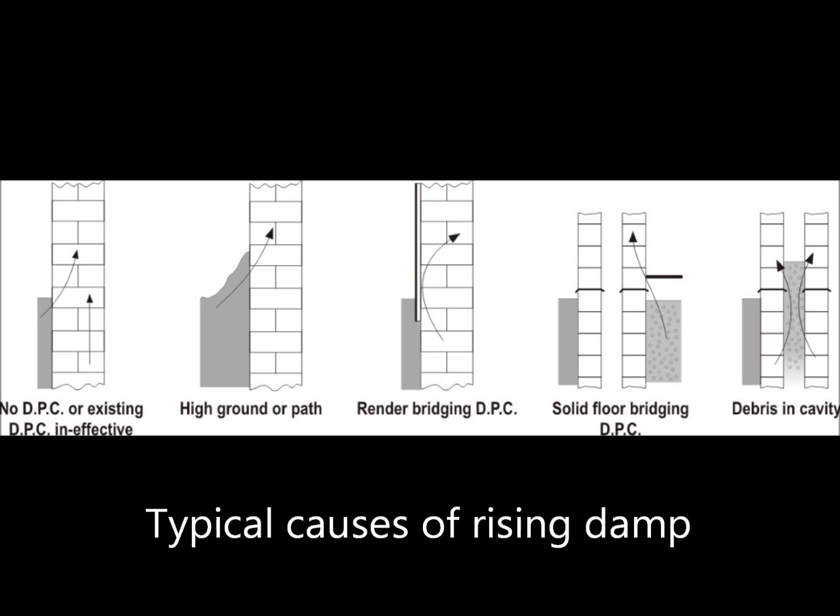Why do we get rising damp? There are a number of reasons, mostly building defects. There might never have been a damp proof course installed. High ground levels might have been an issue. We might have render or plastering bridging the damp proof course. Retrofitted solid floors installed incorrectly would also lead to bridging of the damp proof course. And in the construction of the building, cavity walls may have been filled with mortar and debris, which also causes bridging of the damp proof course.